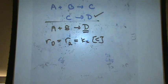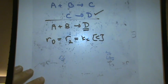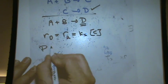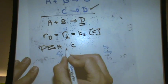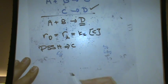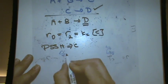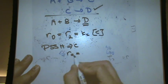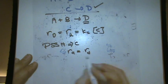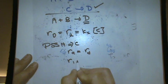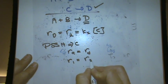However, C is the intermediate, so I can't have the intermediate in my rate law answer. I must continue. Let's find an expression for C by applying the pseudo steady state hypothesis on C. The rate of appearance or production equals the rate of disappearance or reaction. C appears in reaction 1 and it disappears in reaction 2.